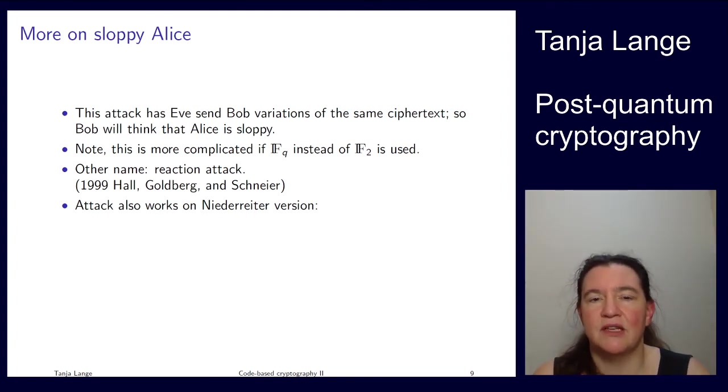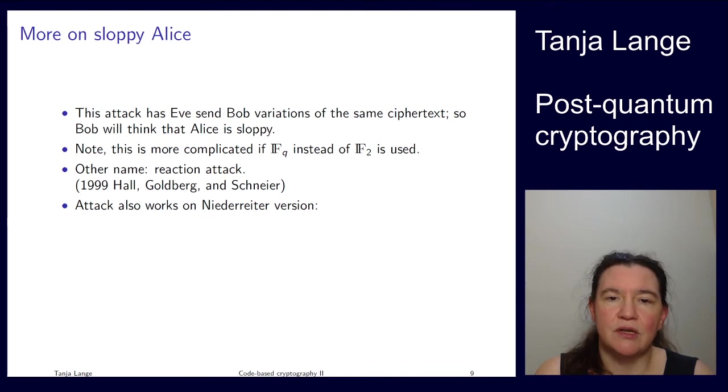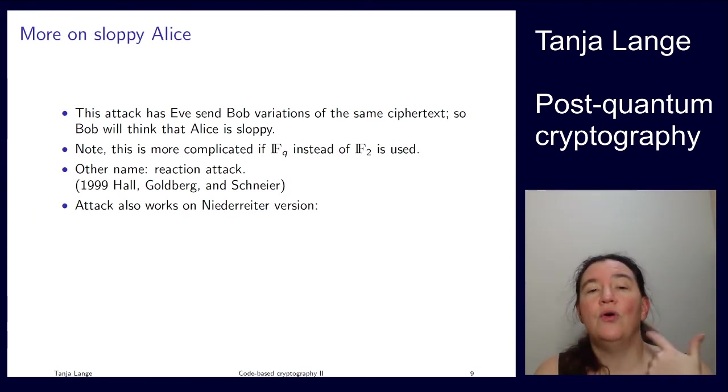There's a different attack for this, a different name for these attacks, namely reaction attacks. So a year later, Hall, Goldberg and Schneier were posting a broader paper where they investigated more cryptosystems under such active attacks, where they showed how to either even get the private key or at least decrypt by such interaction, by seeing how the other party reacts on invalid ciphertext. And if you thought this was just something on the McEliece system, no, we can do the same thing on the Niederreiter version as well. You just have to figure out what it means to flip a bit in e.